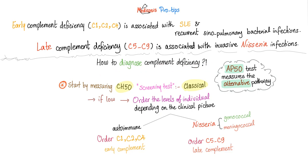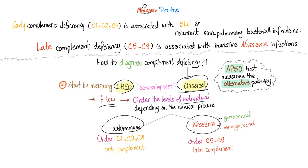To diagnose complement deficiency, start by measuring CH50, which measures the classical pathway. If it's low, the classical pathway is over-activated. If you suspect autoimmune disease, order individual complement proteins C1, C2, and C4. If you suspect Neisseria gonorrhea or Neisseria meningitidis, order the late protein components.